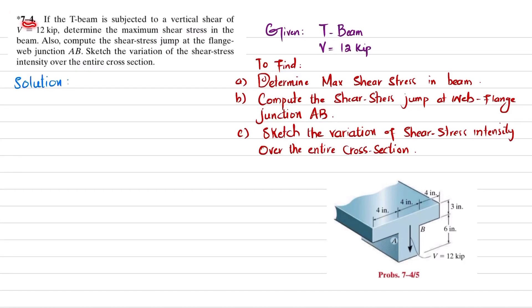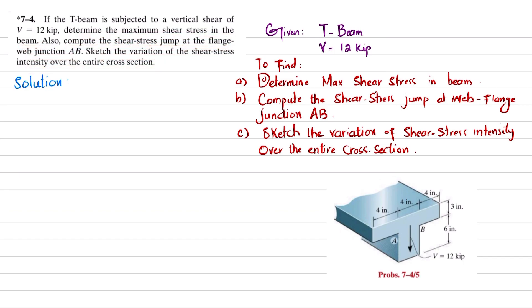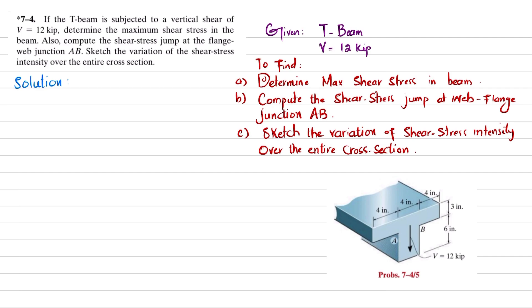Welcome back. Problem 7-4: if a T-beam is subjected to a vertical shear of 12 kips, determine the maximum shear stress in the beam. Also compute the shear stress jump at the flange-web junction and sketch the variation of shear stress intensity over the entire cross section. This is a T-beam subjected to a shear of 12 kips, and all dimensions are given.